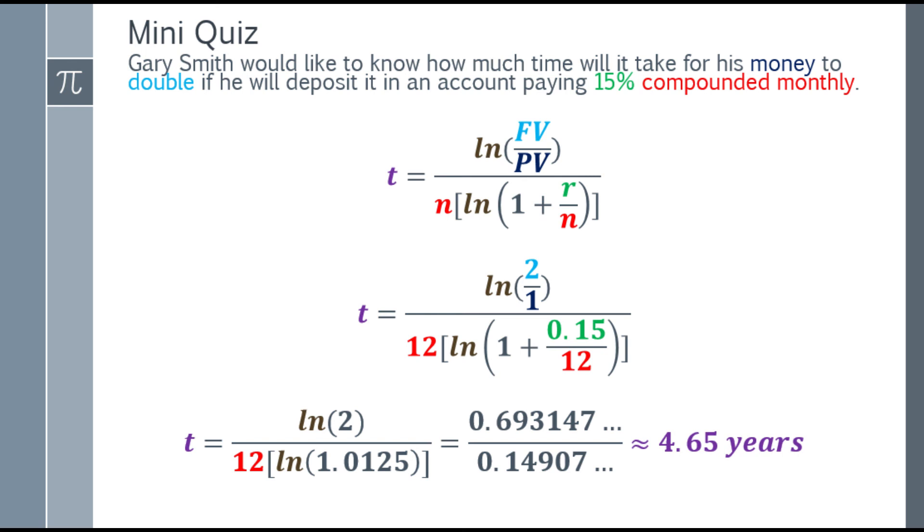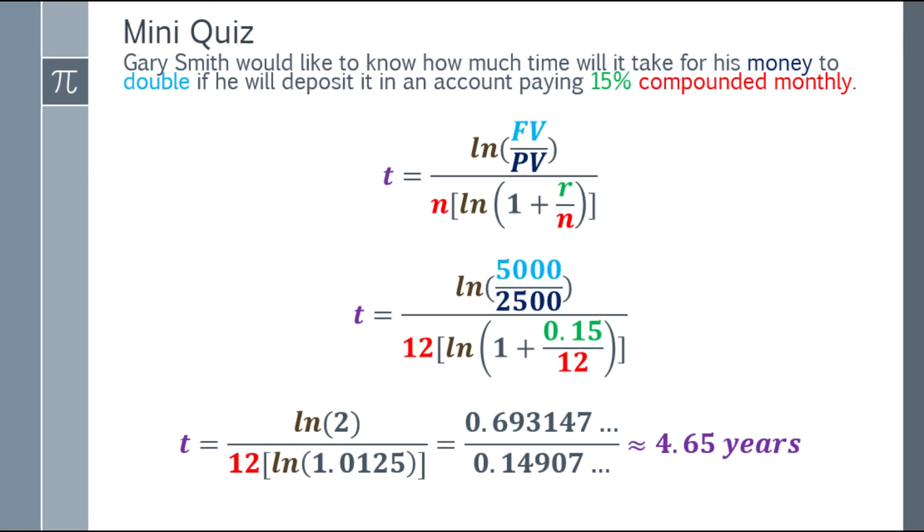0.693147 something divided by 0.14907 something is approximately 4.65 years. Again, if you're going to do it in the calculator, it should be continuous. Don't round off in the middle of the computation. It needs to be continuous. Round off only at the final answer itself. It will take 4.65 years for Gary Smith if he deposits money and wants it to double in a bank paying 15% compounded monthly. If you doubt that example where the future value is 2 and present value is 1, we can try another example. As long as the future value is double the present value. Let's say $5,000 is my future value and the present value is $2,500. Does it meet the requirement? Yes, because you deposited $2,500 and it doubled to become $5,000. Let's check, and you will still arrive at the same answer. You'll see on screen it's still 4.65 years.